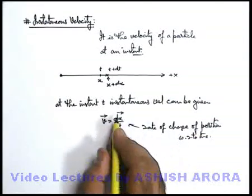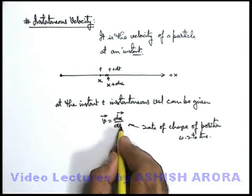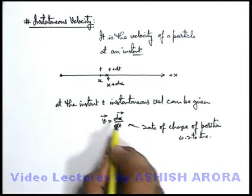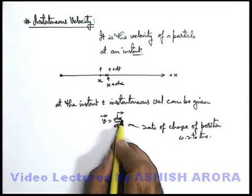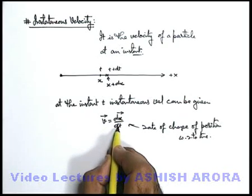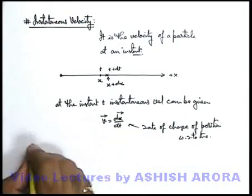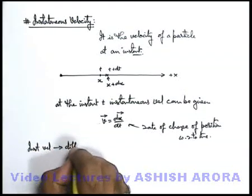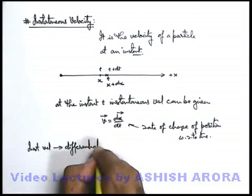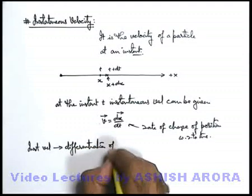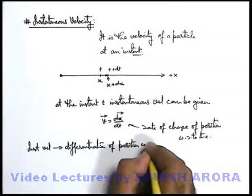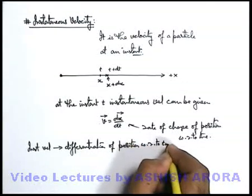Or we can simply write, if we are having the position as a function of time, we can find out the differentiation of position with respect to time to get the value of instantaneous velocity. So we can also write instantaneous velocity is differentiation of position with respect to time.